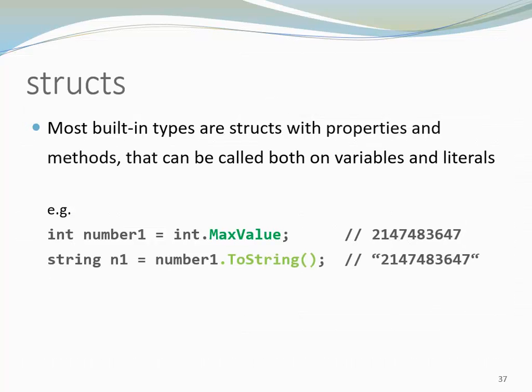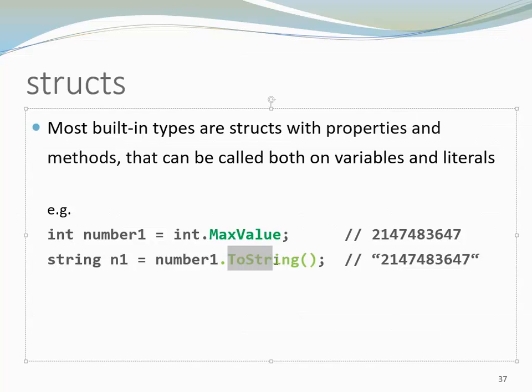Now here we are calling toString, the method on a variable number 1. Number 1 is the variable that includes the largest integer. And now we are turning this to a string and it gives us a string that includes all those numbers.